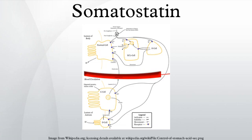Somatostatin is also produced by several other populations that project centrally — that is, to other areas of the brain — and somatostatin receptors are expressed at many different sites in the brain. In particular, there are populations of somatostatin neurons in the arcuate nucleus, the hippocampus, and the brainstem nucleus of the solitary tract.